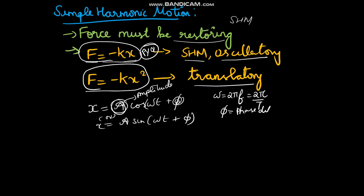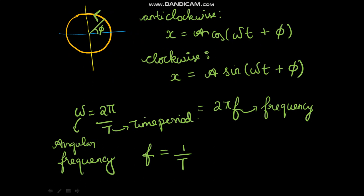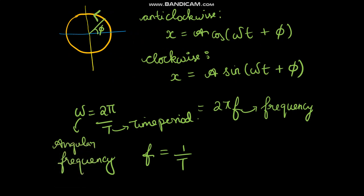The displacement can be either A cos(ωt + ψ) or A sin(ωt + ψ). If ψ is zero, then it simplifies to A cos(ωt) or A sin(ωt). You use cosine or sine according to the condition given in the problem.